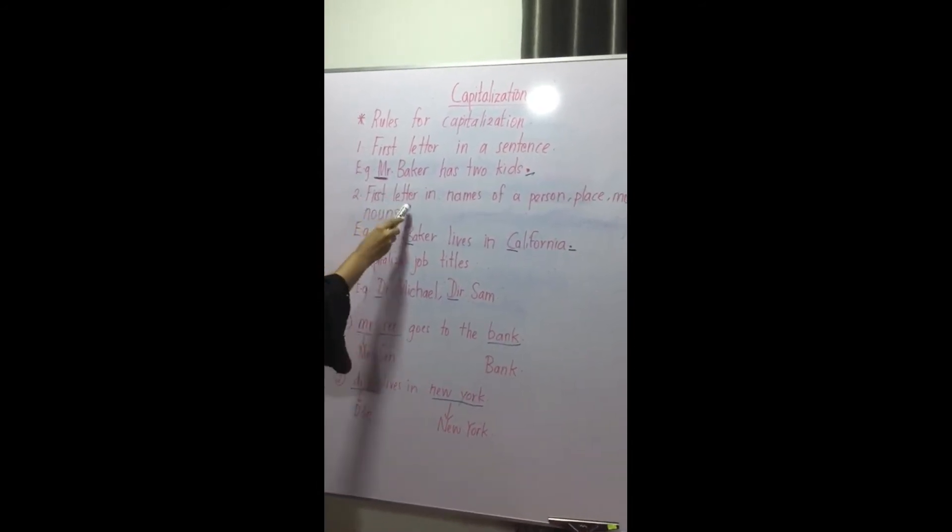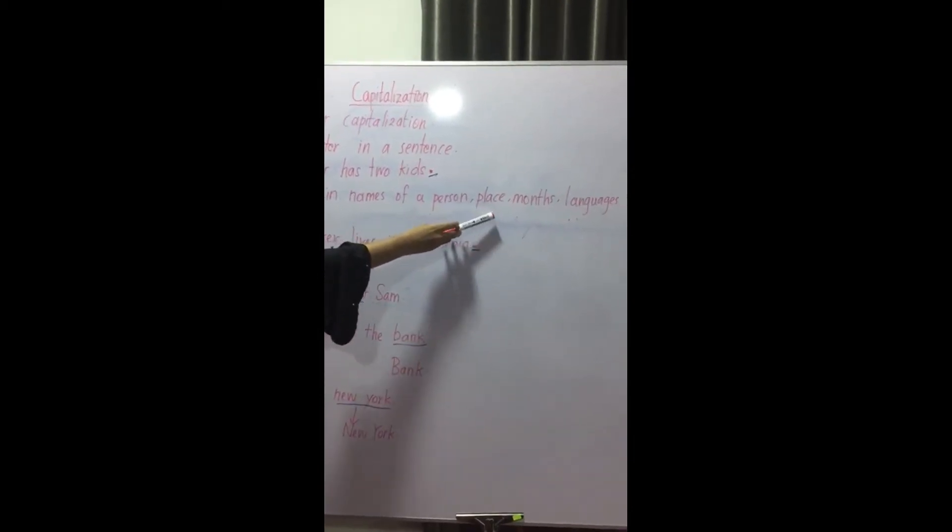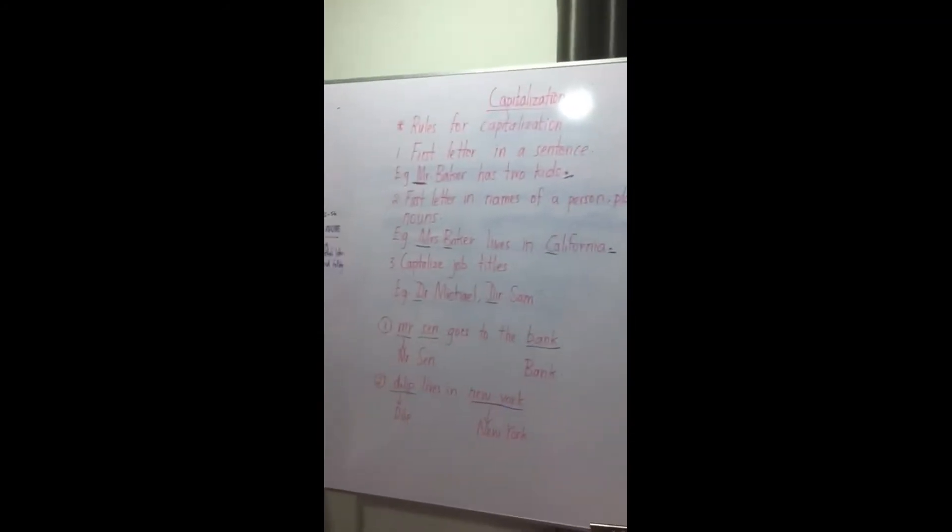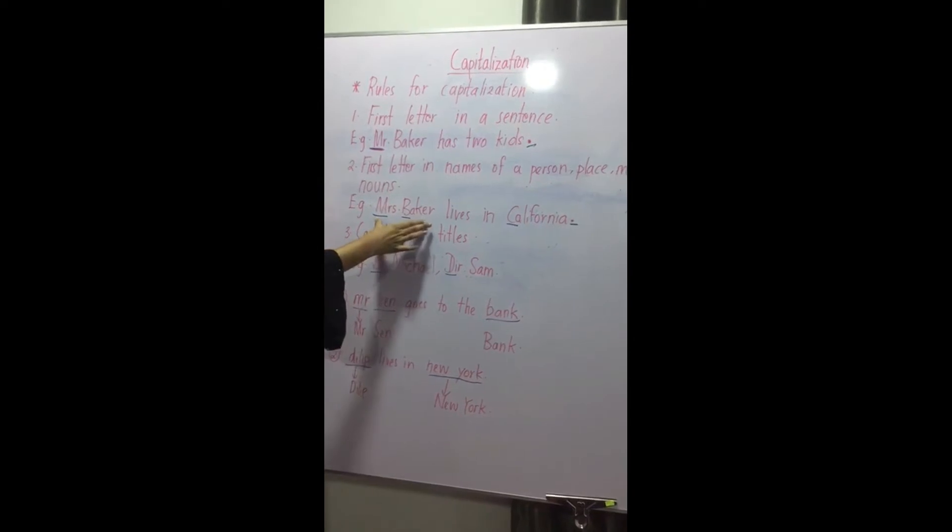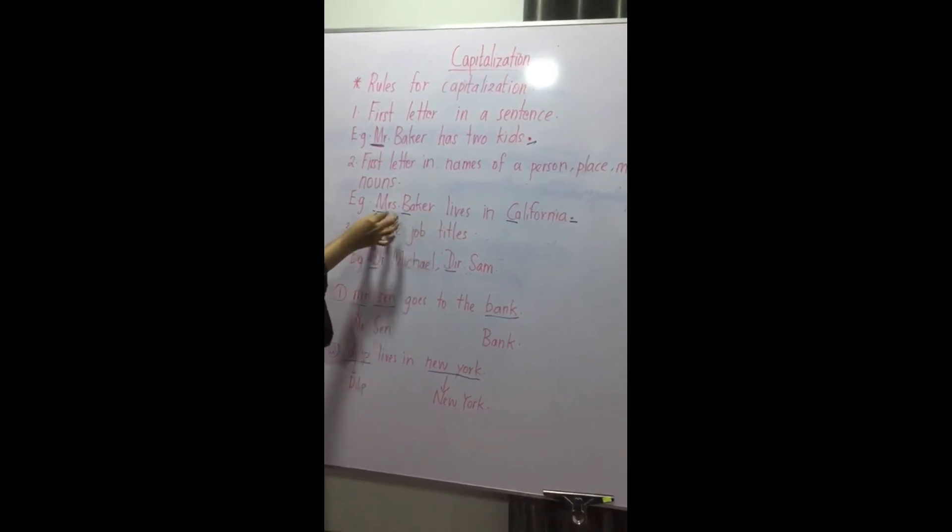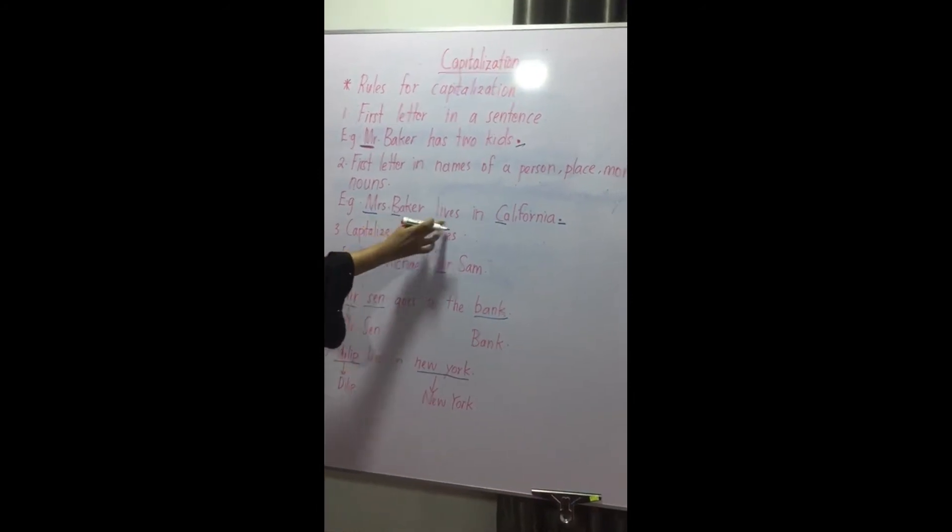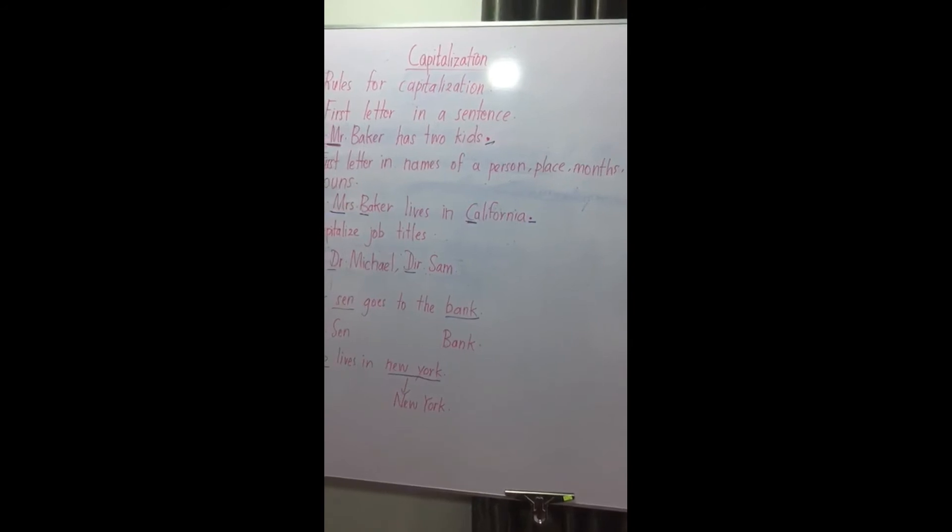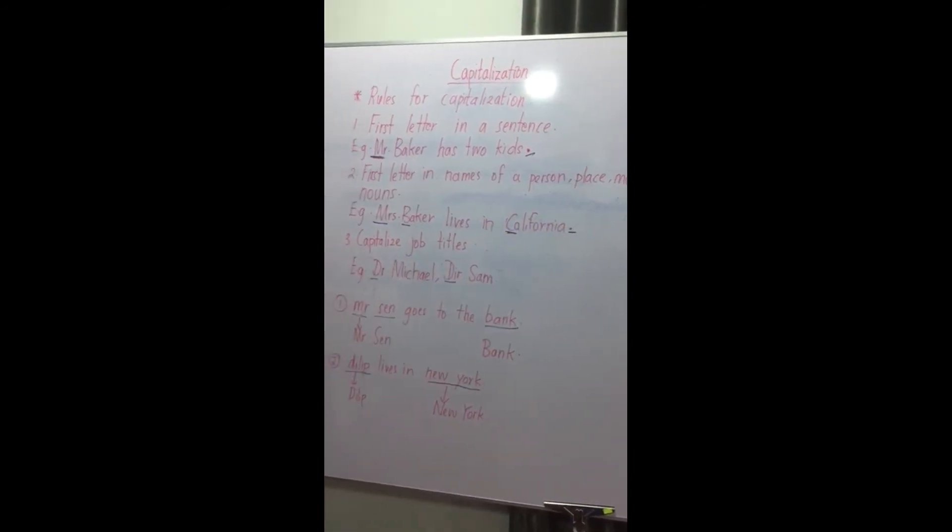Number two, first letter in names of a person, place, months, languages and other proper nouns. For example, Mrs. Baker. So this is a name of a person. So the first letter starts with capital letter. Lives in California. California is a city. So C starts with capital letter and the sentence ends with full stop.